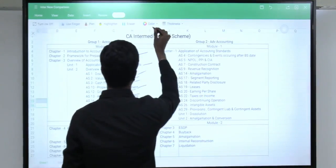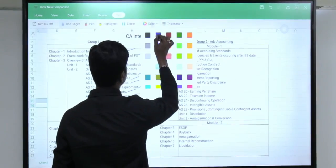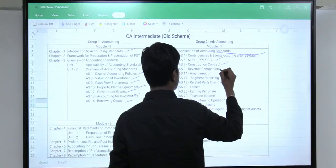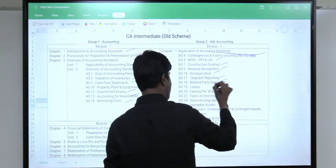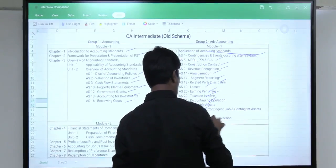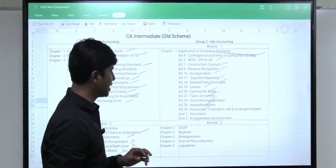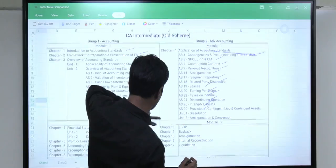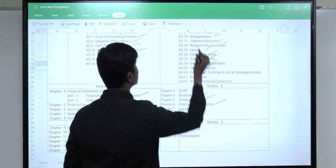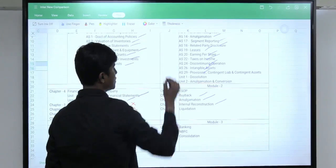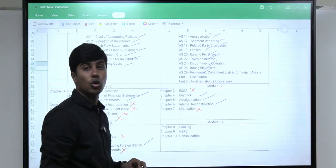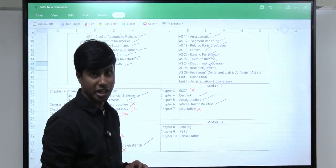Let us quickly see the same with regard to our new scheme with respect to advanced accounting. AS 4, AS 5, AS 7, 9, 14, 17, 18, 19, 20, 22, 24, 26, 29. All of this is still there and will continue to have our topics of buyback, amalgamation, internal reconstruction. But whatever was there in our Group 2 accounts previously, ESOP and liquidation are no longer there in our new scheme of education advanced accounting.